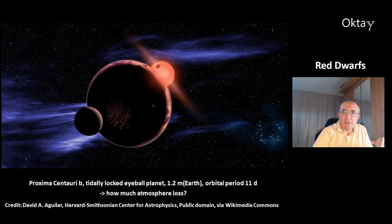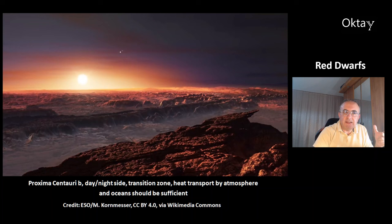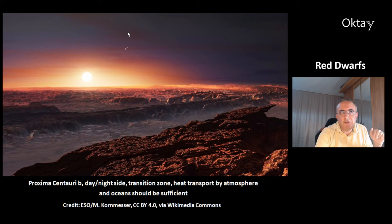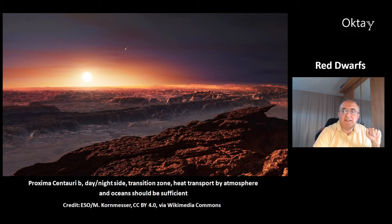And that's the best case scenario. This is how the surface of Proxima Centauri b could look, showing the transition zone between the permanent day and night sides. The star Proxima Centauri is always at the same spot in the sky, and in the background you can see the other two bigger stars further away. Computer models show there should be enough heat transport by the atmosphere and oceans to prevent the atmosphere from freezing out on the permanent night side.